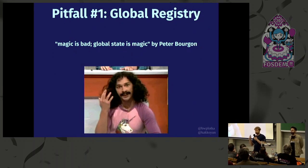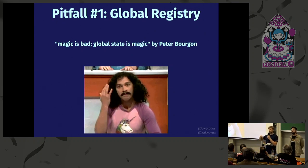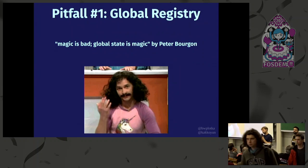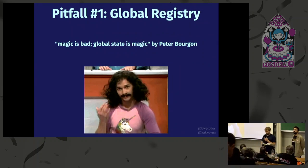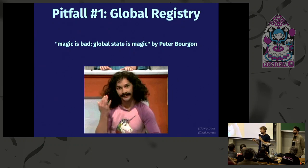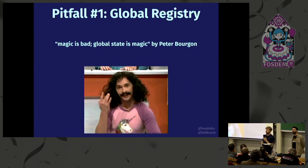Imagine you instrument a library that will be used by your project and also by others in open source. Using a global registry can cause problems. This pattern of using the global registry leaked into the Prometheus ecosystem as a good pattern — it is not. There are two global states in the naive example: a global variable and a global registry. MustRegister hides underneath the default register structure, which holds global state per package.